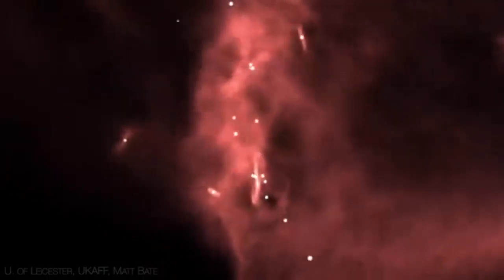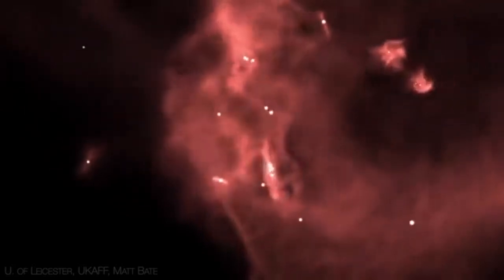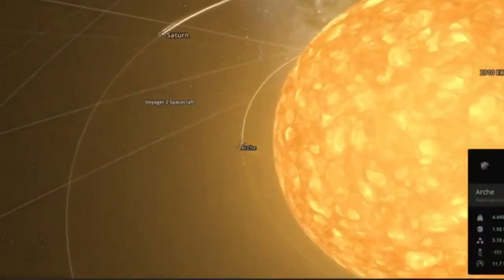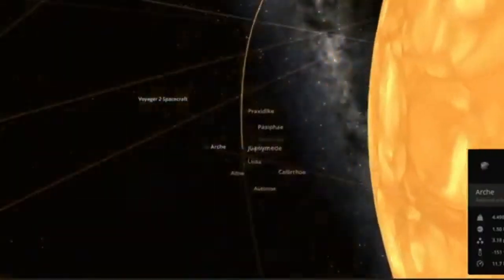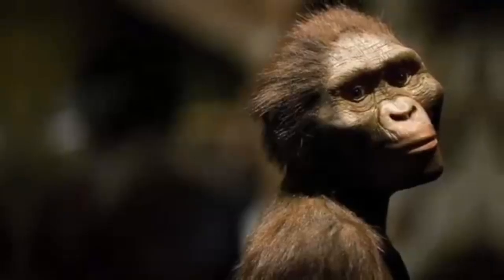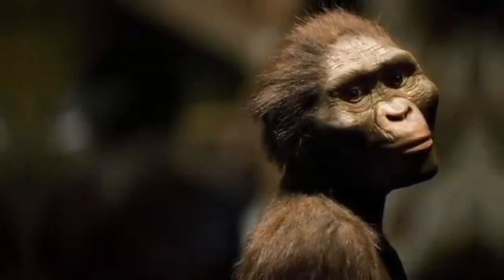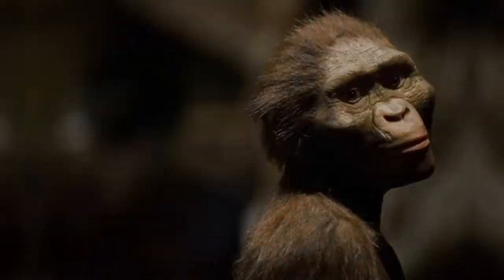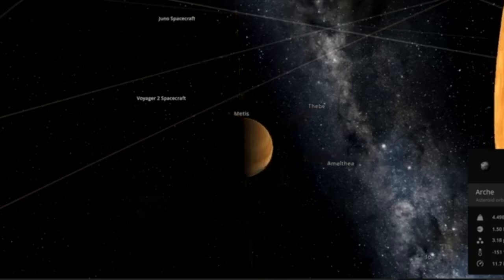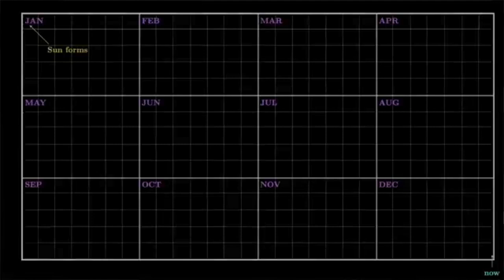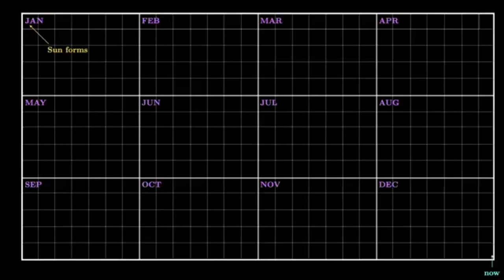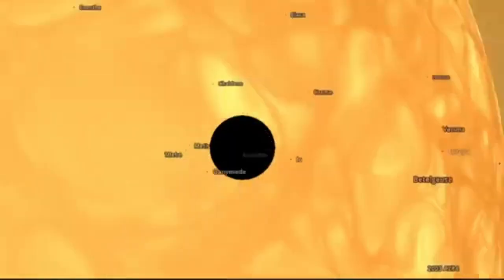Another type of dimming that scientists have seen in this star is a regular pattern of light changes that repeats every 400 days. This isn't caused by dust or anything outside the star. It actually comes from inside. Betelgeuse is a red supergiant, and like many stars of its kind, it experiences internal pulsations. These are slow rhythmic expansions and contractions in the star's outer layers, kind of like a heartbeat. As the star swells up and then shrinks again, its brightness changes slightly. The 400-day brightness cycle is believed to be Betelgeuse's main pulsation rhythm, and it's one of the key ways scientists study the inner workings of this giant star.